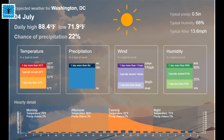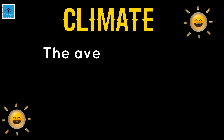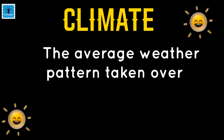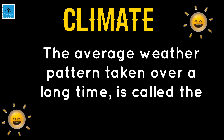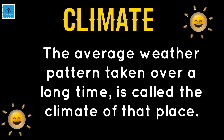Meteorologists record the weather every day, and records of weather have been preserved for the past several decades. These help them determine the weather pattern at a particular place. The average weather pattern taken over a long period of time, like about 25 years, is called the climate of that place.